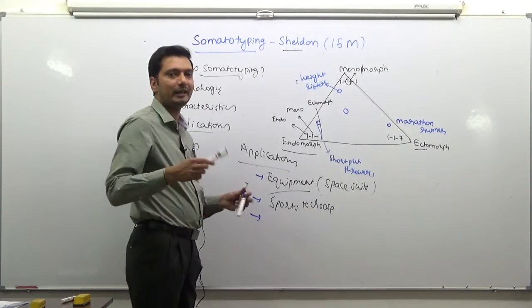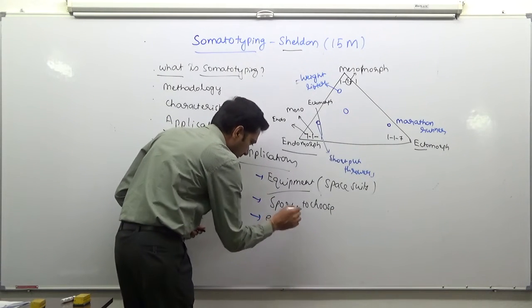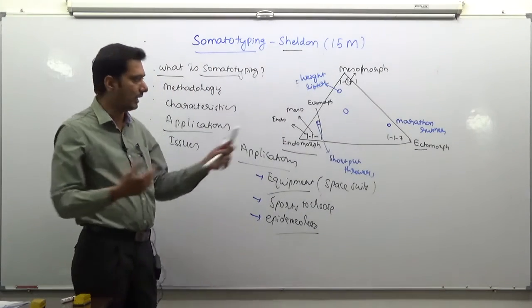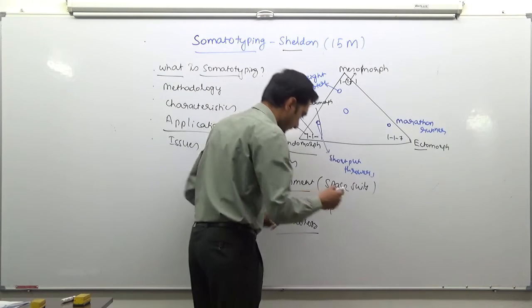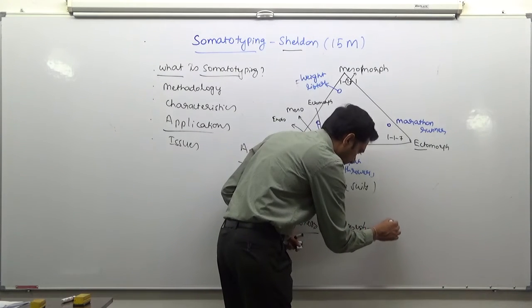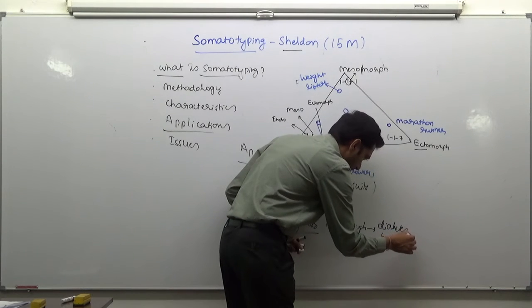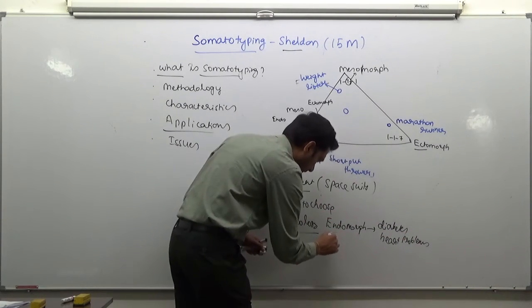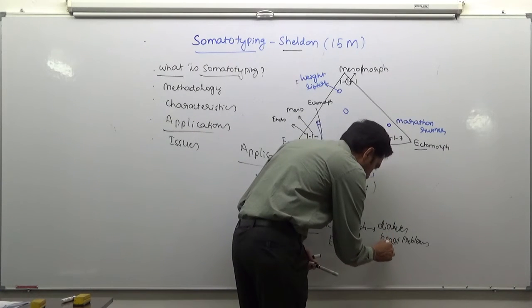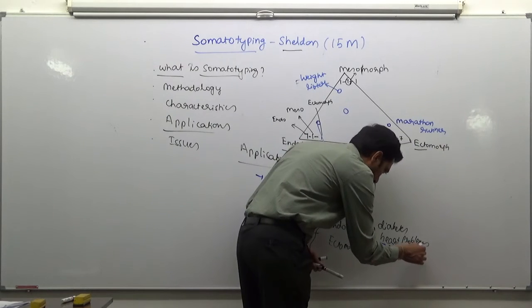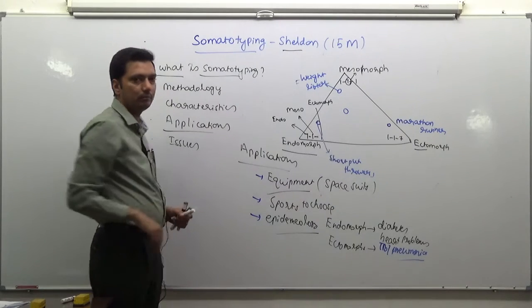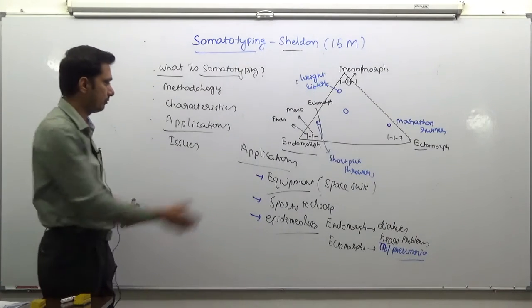Finally, you can make predictions in epidemiology. People who are endomorphs have larger body fat and are more prone to diseases such as diabetes and heart problems. Ectomorphs, who are really thin and weak, may be prone to diseases such as TB and pneumonia. You can make certain predictions using these body types. These are applications of somatotypes given by Sheldon.